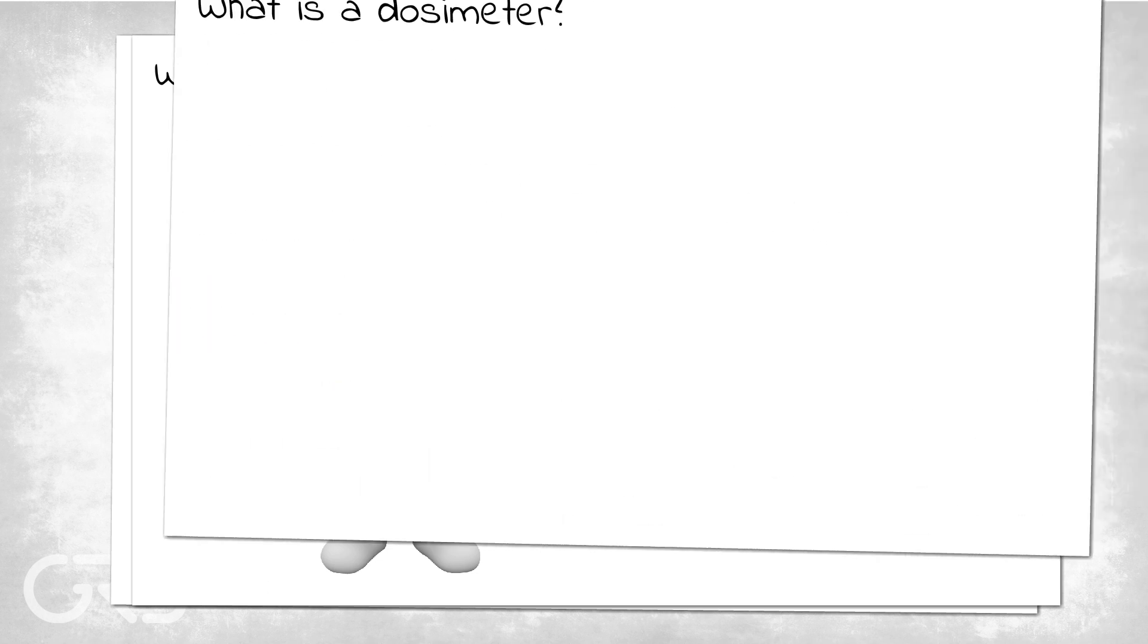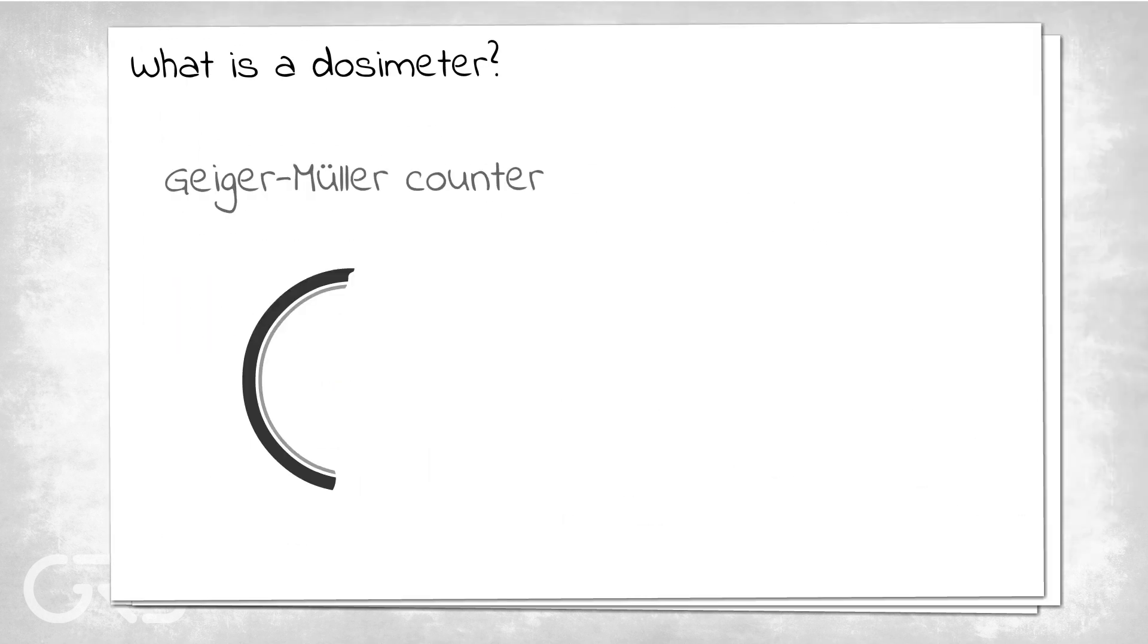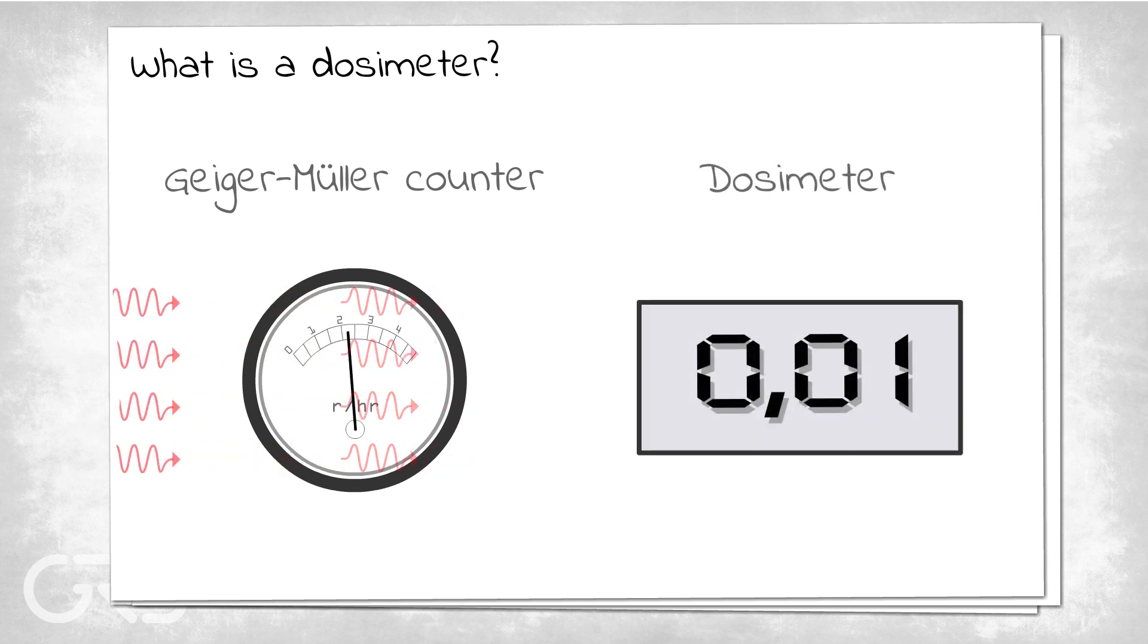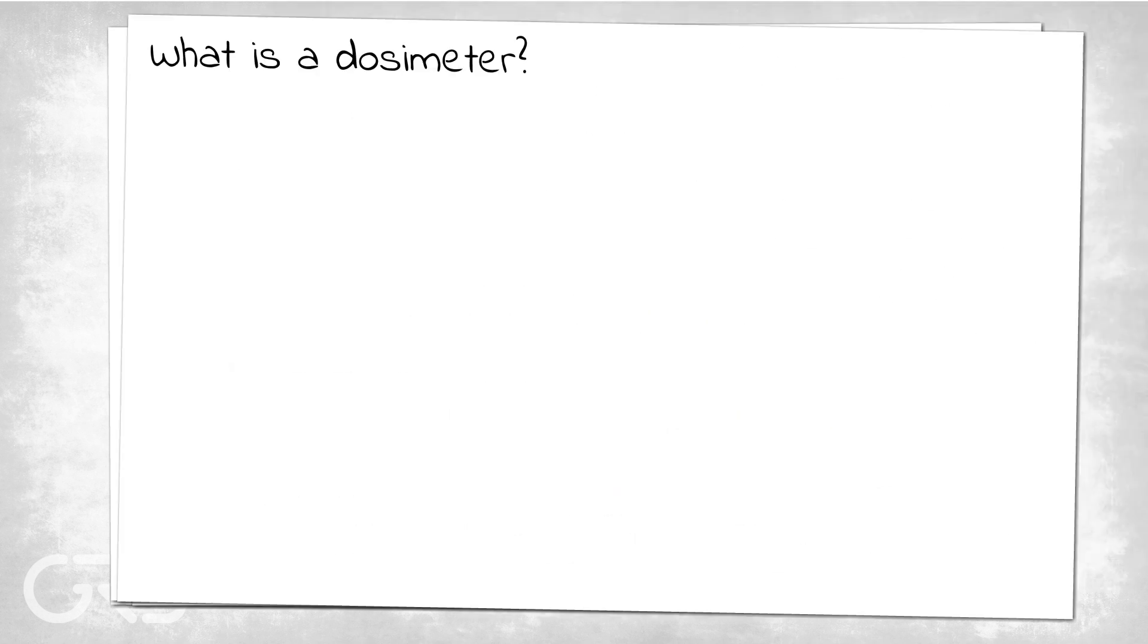Dosimeters should not be confused with the Geiger counter. The Geiger counter indicates the known radiation intensity, but not the sum of all the previously received radiation doses. Some dosimeters have an additional function of being able to warn in advance, indicating the areas where the ionising radiation is more intense.